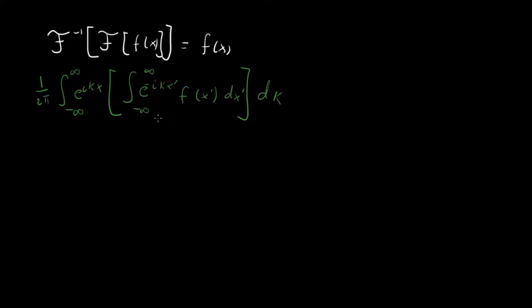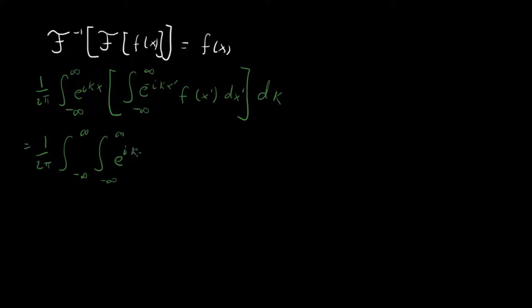The secret to getting this right is to rearrange terms in the right way. We can move the exponential e to the i k x inside the inner integral because it has no x prime dependence — the x prime integral doesn't care about it. Doing that, we get two integrals with e to the i k times (x minus x prime), f of x prime, dx prime, dk. Now the key step: we interchange the two integrals and do the k integral first.